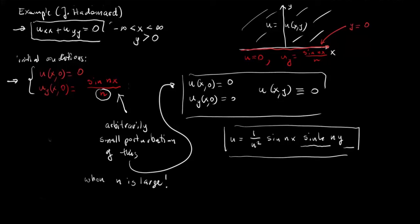So let us now fix n to be capital N very very large. So note what happens here. If we take these initial conditions then the solution of our PDE in the upper half plane is u equal 0 everywhere.